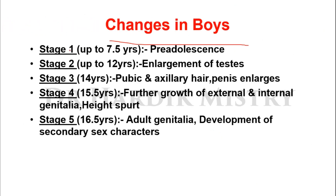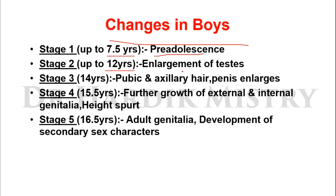Changes in boys: Stage 1 — up to 7.5 years, known as pre-adolescence. Stage 2 — up to 12 years, development of testes takes place. Stage 3 — 14 years, pubic and axillary hair and penis enlargement occur. Stage 4 — 15.5 years, further growth of external and internal genitalia and a height spurt occurs. Stage 5 — begins from 16.5 years, with development of adult genitalia and secondary sex characteristics.